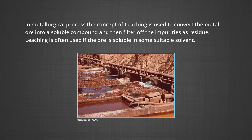The processes discussed till now were basically physical methods of concentration of ore. For some ores, the chemical process of leaching is used. In general, leaching means to separate soluble constituents of a mixture by passing a suitable liquid through it. In metallurgical processes, the concept of leaching is used to convert the metal ore into a soluble compound and then filter off the impurities as residue. Leaching is often used if the ore is soluble in some suitable solvent.